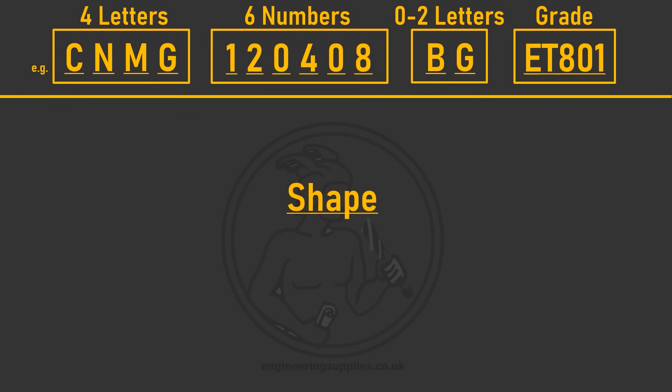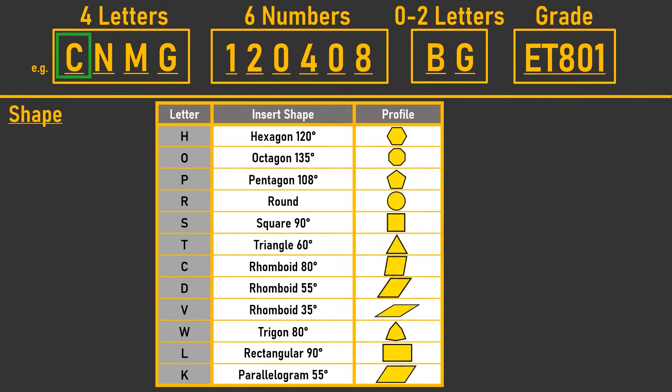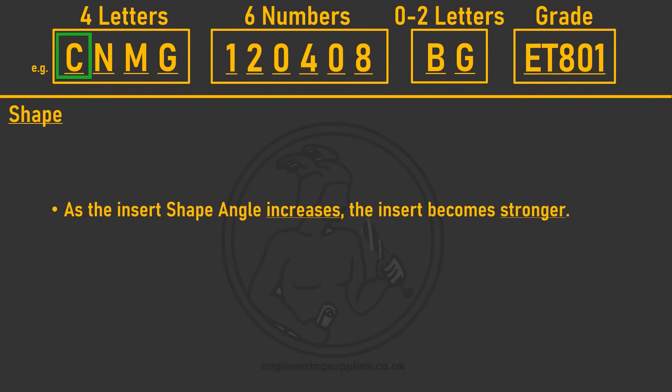The first letter refers to the surface shape. Each letter corresponds to a point angle. For example, C is rhomboidal with an 80 degree angle, T is triangular, R is round, S is square, and so on.